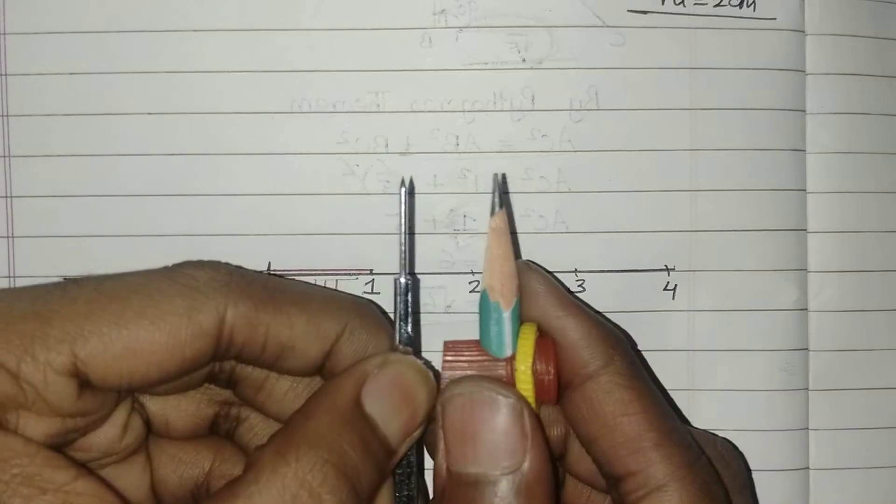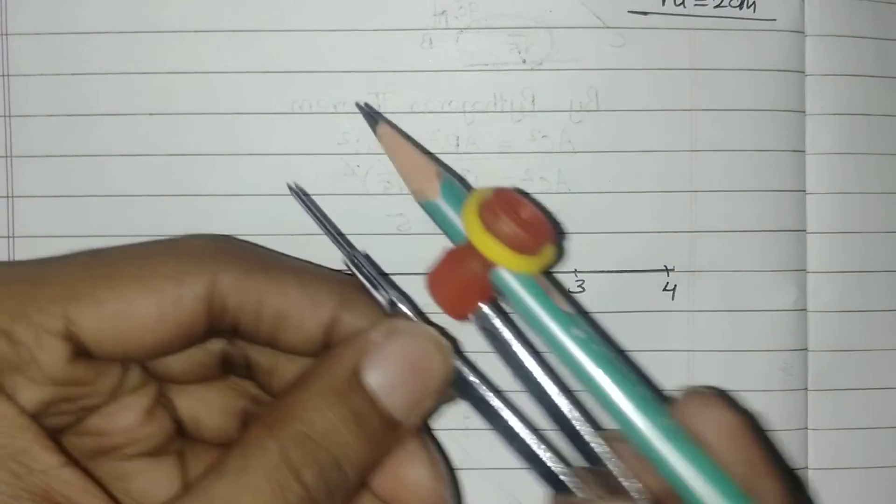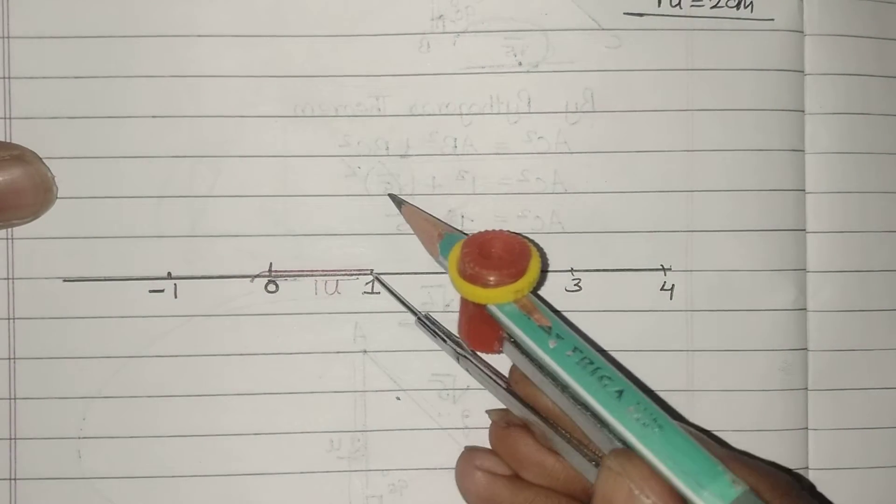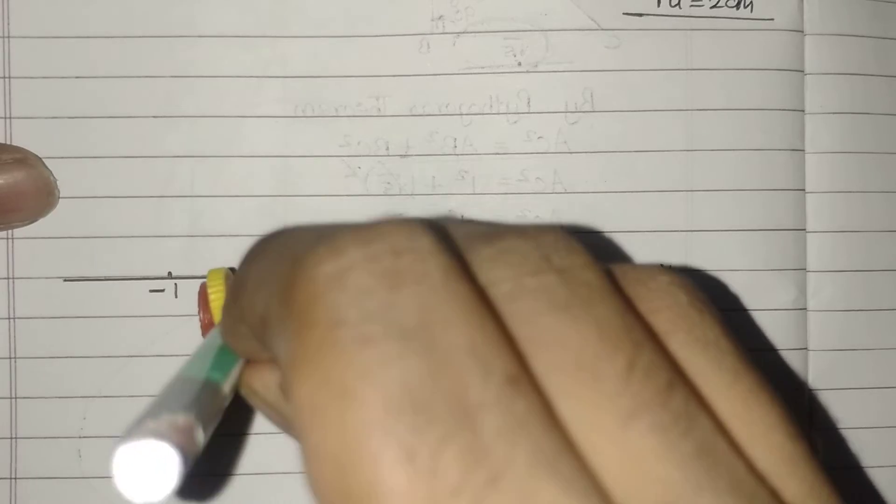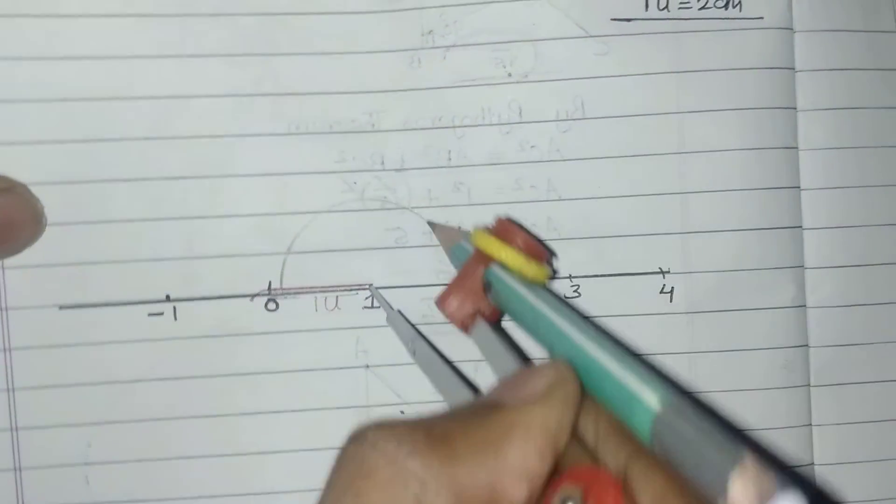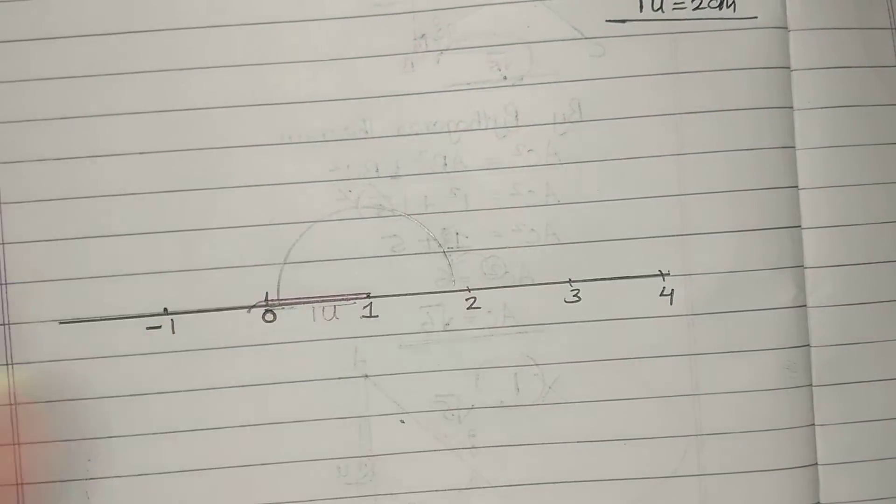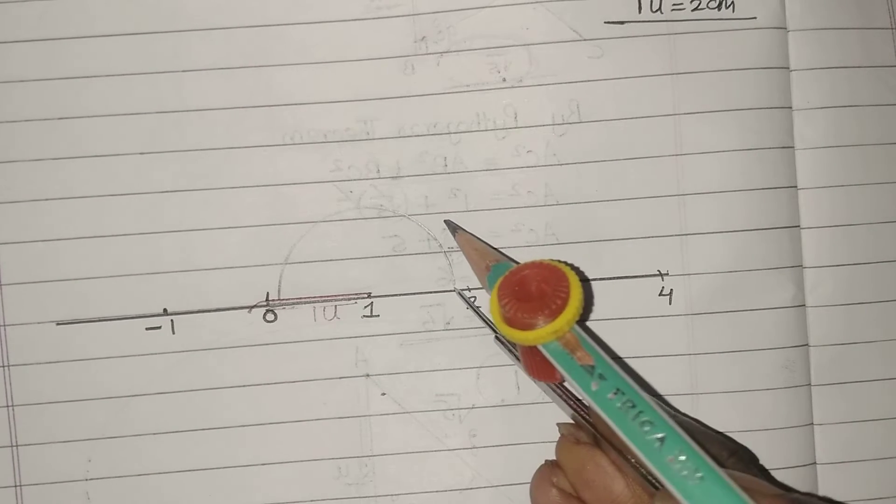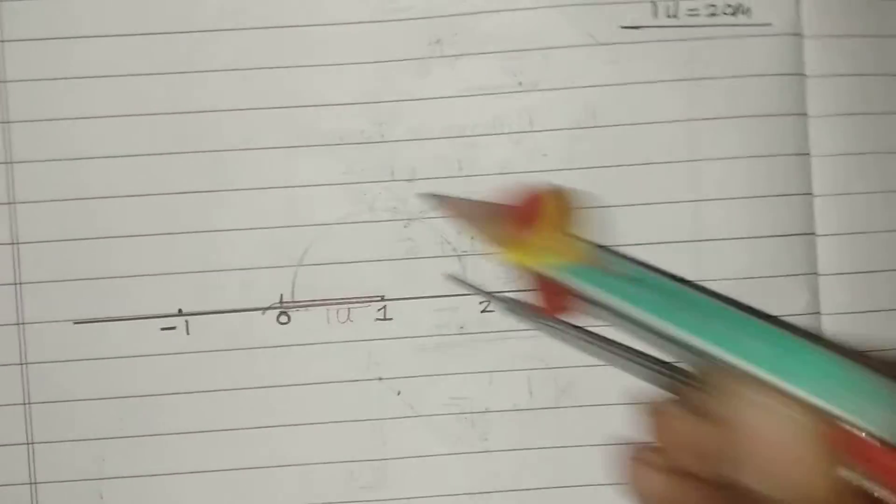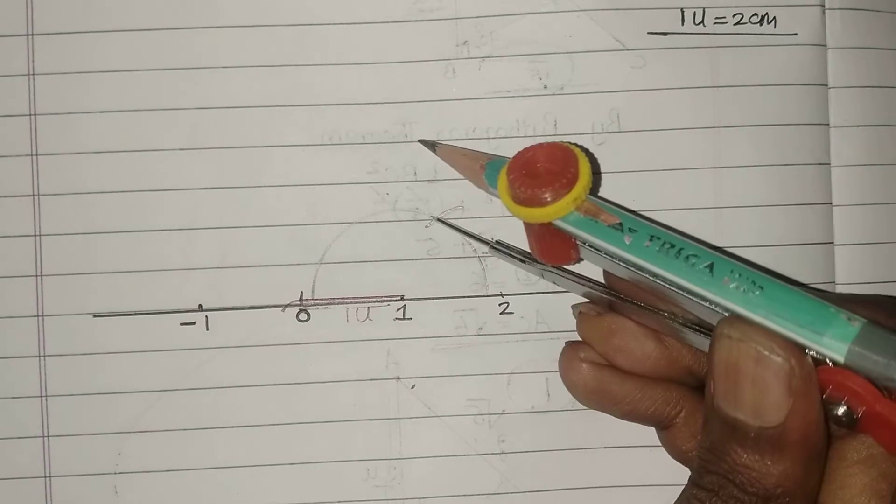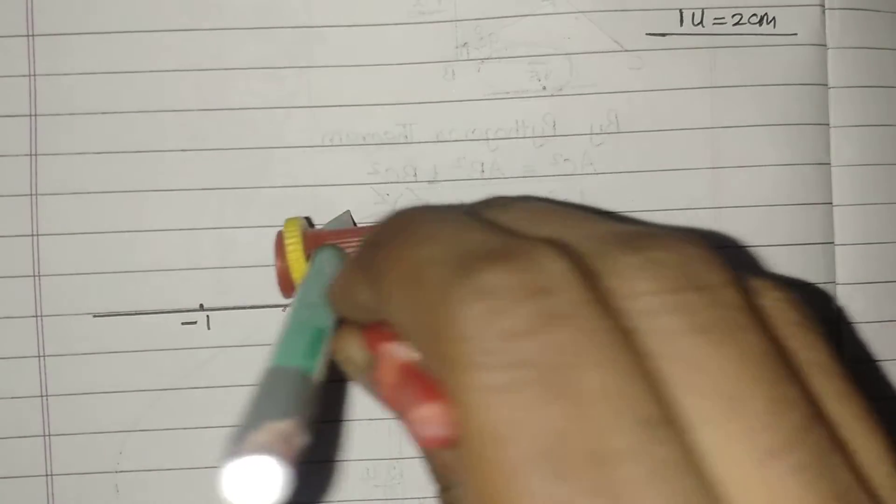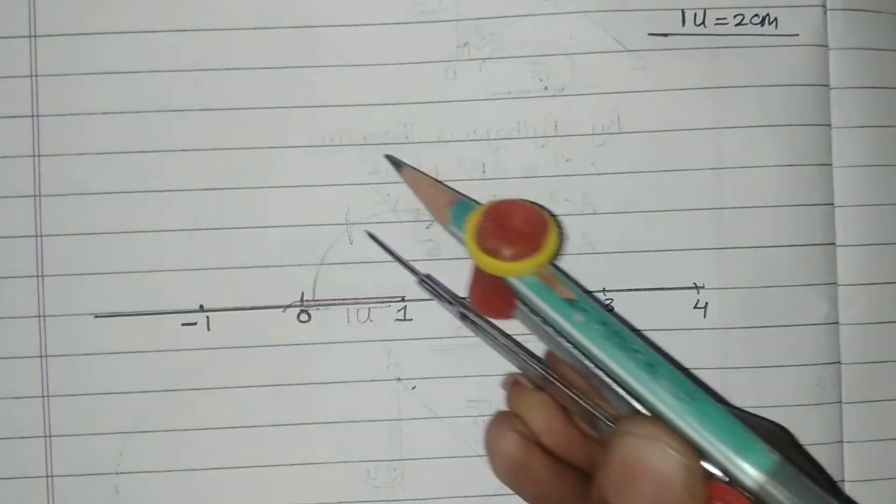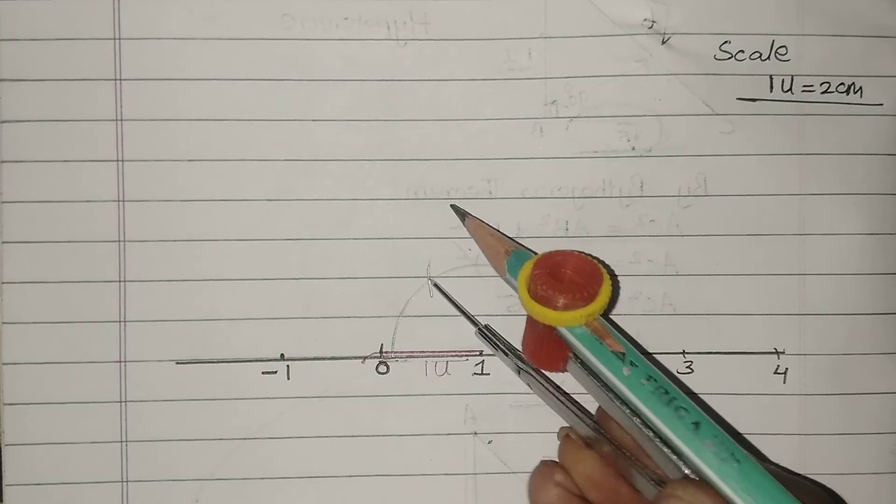I am just going to take a little bit of radius like this. Keeping the needle at this point, I will draw a semi-circle like this. After that, keep the needle at this end of the semi-circle, cut an arc. Again keep it here at this arc and cut another arc. From these 2 arcs, cut an arc above like this.